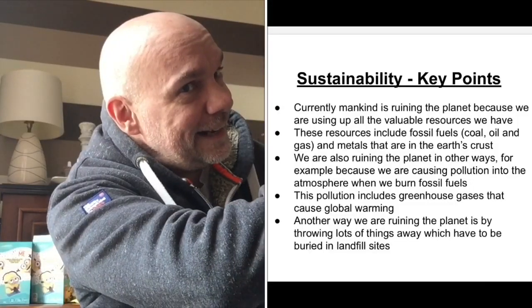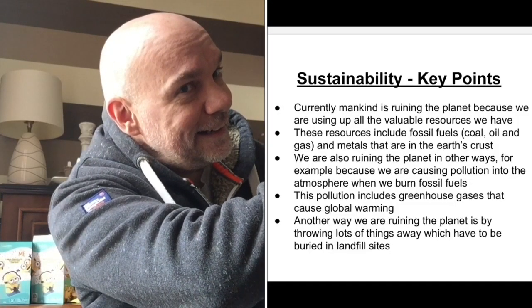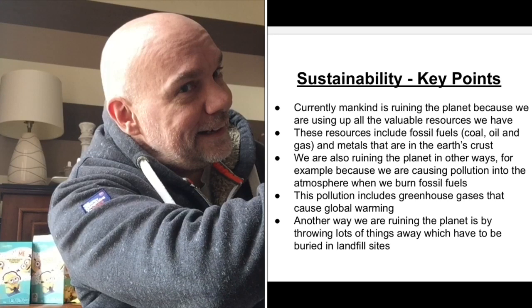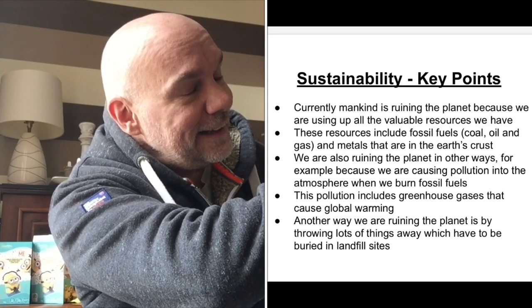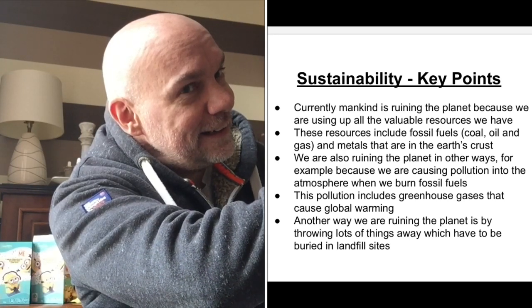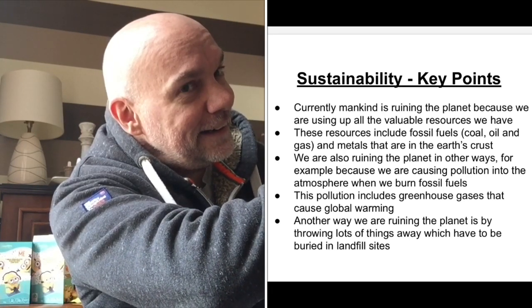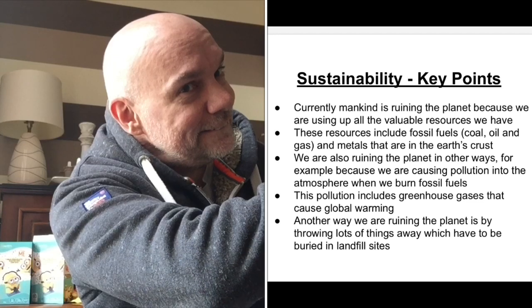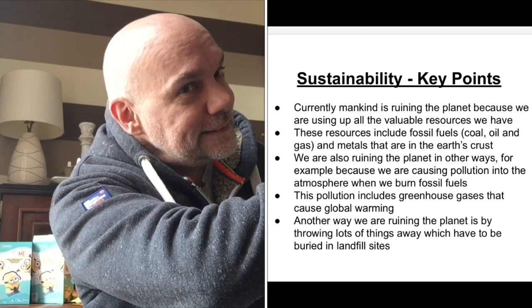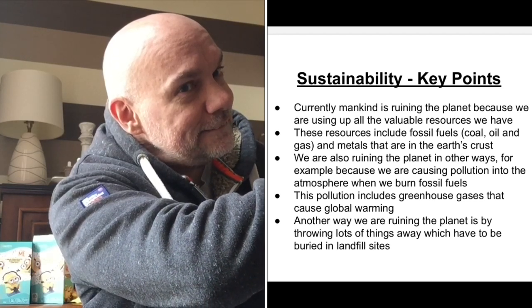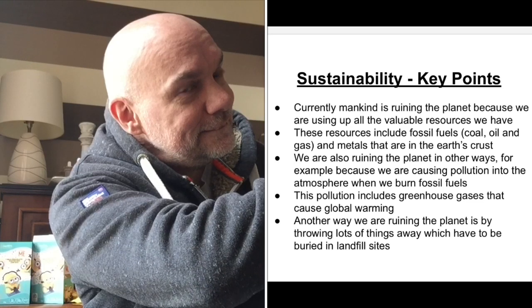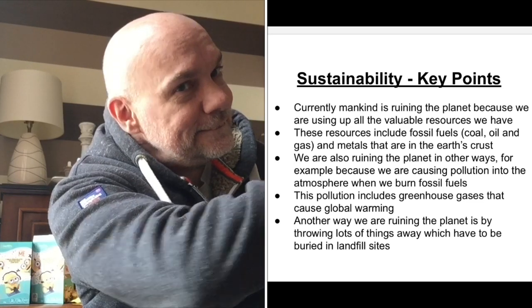Here are the key points. Currently, mankind is ruining the planet because we are using up all the valuable resources we have. These resources include fossil fuels, which are coal, oil and gas, and metals that are in the Earth's crust. We are also ruining the planet in other ways — for example, because we are causing pollution into the atmosphere when we burn fossil fuels. This pollution includes greenhouse gases that cause global warming. Another way we are ruining the planet is by throwing lots of things away which have to be buried in landfill sites.